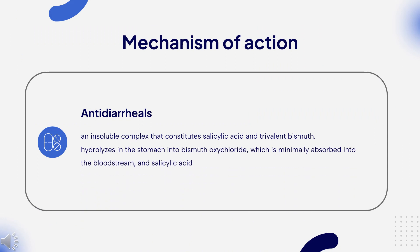Mechanism of Action: The exact mechanism of bismuth subsalicylate is not fully understood. Bismuth subsalicylate is an insoluble complex that constitutes salicylic acid and trivalent bismuth. Once orally administered, bismuth subsalicylate hydrolyzes in the stomach into bismuth oxychloride, which is minimally absorbed into the bloodstream, and salicylic acid, which is almost completely absorbed. Bismuth interacts with anions and compounds such as hydrochloric acid, bicarbonate, phosphate, and hydrogen sulfide in the gastrointestinal tract, to form bismuth salts such as bismuth oxychloride, bismuth subcarbonate, bismuth phosphate, and bismuth sulfide. Bismuth salts possess bactericidal and antimicrobial activity, mainly by preventing bacteria from binding and growing on the mucosal cells of the stomach.